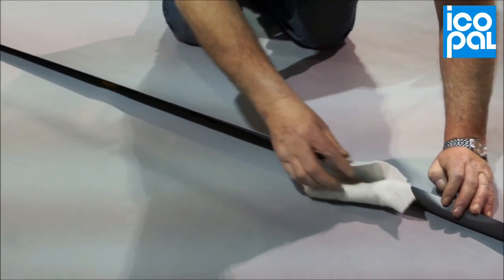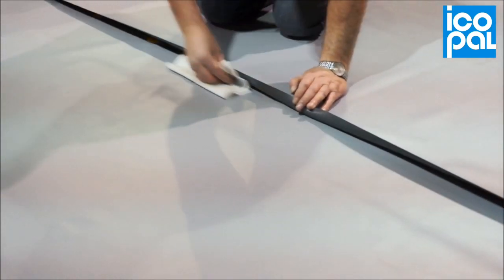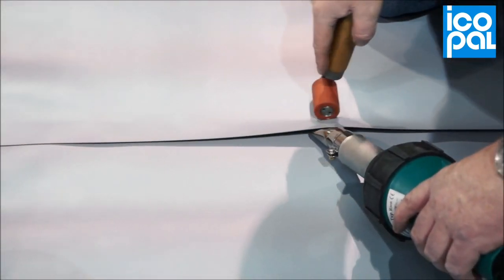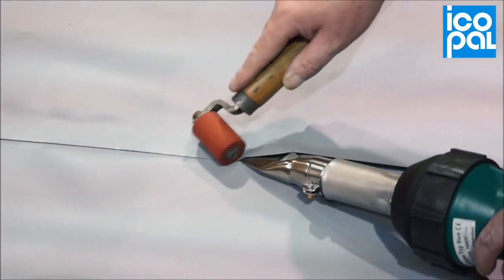Before welding, clean the two surfaces to remove all dirt and debris. Pre-weld the seam prior to fully welding the two membranes together.